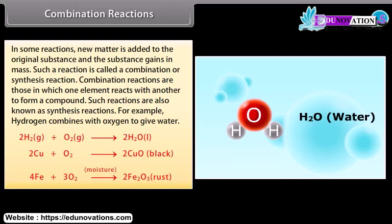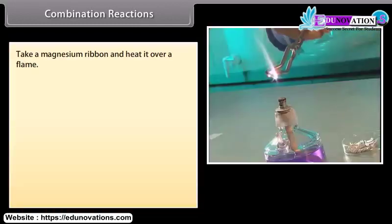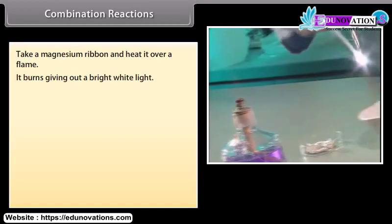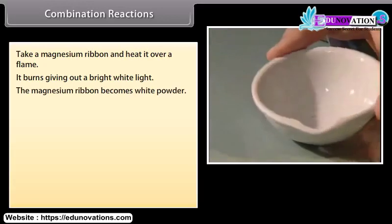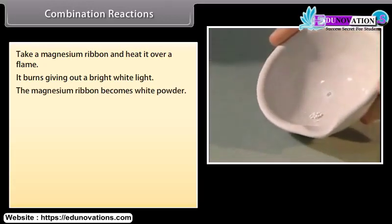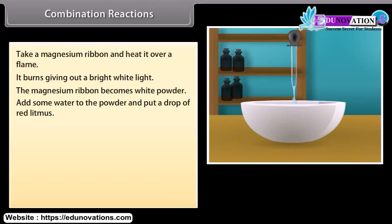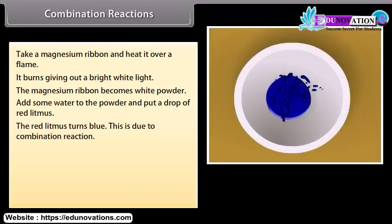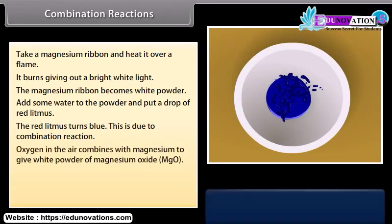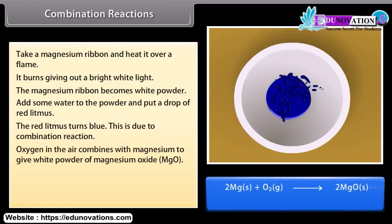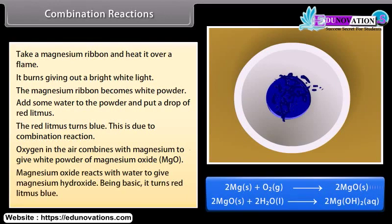Take a magnesium ribbon and heat it over a flame. It burns giving out a bright white light. The magnesium ribbon becomes white powder. Now add some water to the powder and put a drop of red litmus. The red litmus turns blue. This is due to combination reaction. Oxygen in the air combines with magnesium to give white powder of magnesium oxide. Magnesium oxide reacts with water to give magnesium hydroxide. Being basic, it turns red litmus blue.